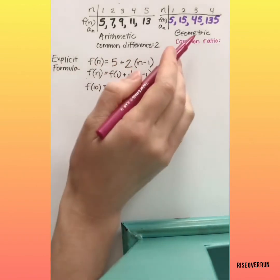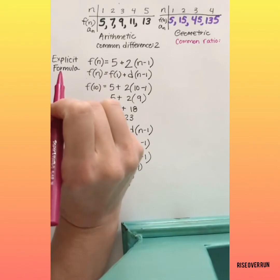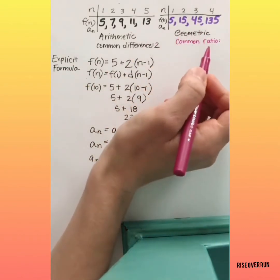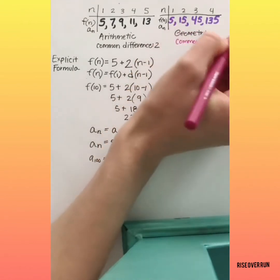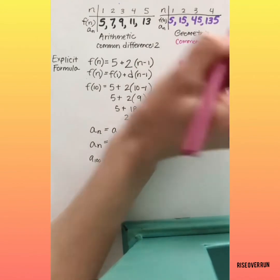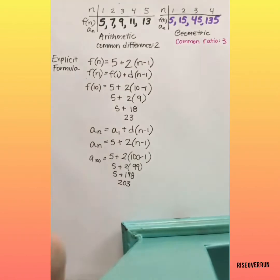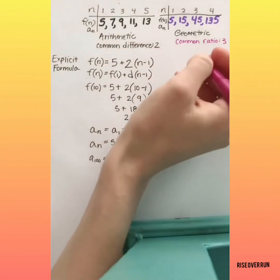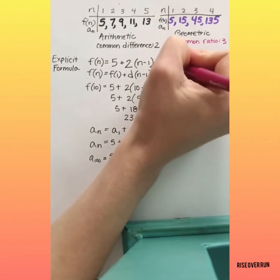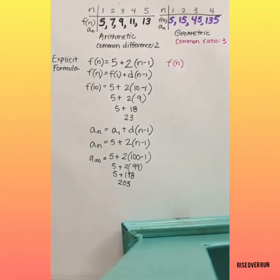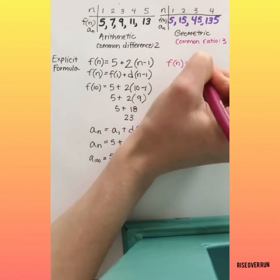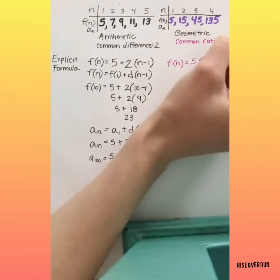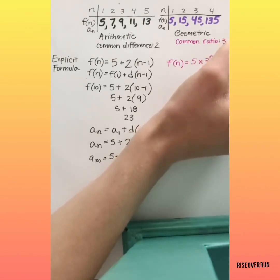Now let's look at the geometric sequence and write an explicit formula. For geometric sequences, you'll have a common ratio. The common ratio is the number that you are multiplying by over and over. So in this case, we're multiplying by 3, so that's our common ratio. We can use that as we write our explicit formulas. For a geometric sequence, the explicit formula will have f of n equals our first term — in this case 5 — times the common ratio, raised to the power of n minus 1.